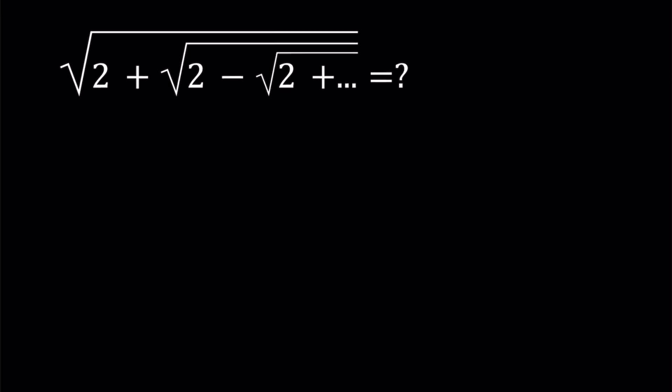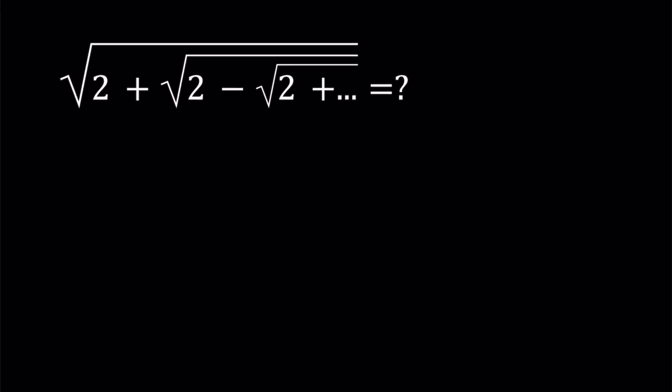So today we're going to be looking at a radical expression, an infinite radical. We have the square root of 2 plus the square root of 2 minus the square root of 2 plus the square root of 2 minus the square root of 2. So it's just going to alternate. The signs are going to alternate, plus, minus, plus, minus. Obviously I didn't write the whole thing because I can't write the whole thing, but hopefully you get the idea.